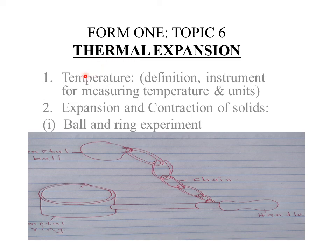Let's start by looking at some definitions. Our first definition is about temperature. Temperature is defined as a measure of the degree or extent of coldness or hotness of an object, measured on some chosen scale.